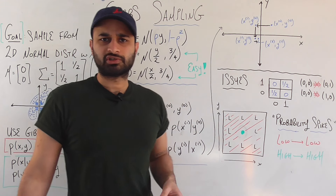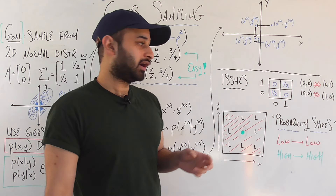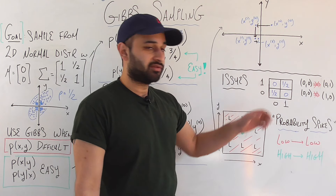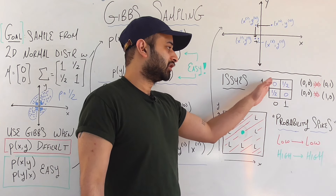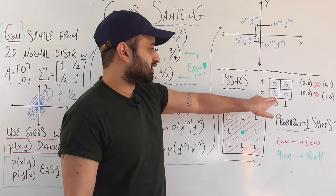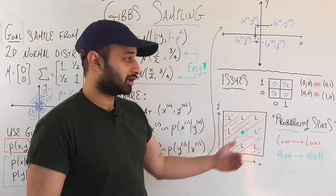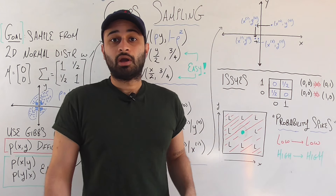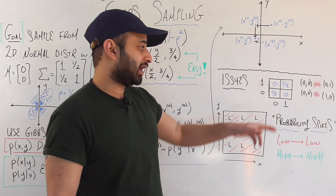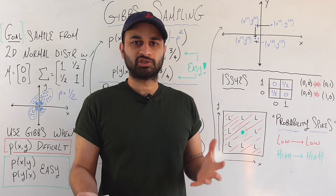There are some pitfalls where Gibbs sampling doesn't work as expected. The first is a contrived case where you have probability only at (0,0) and (1,1) — half probability each — and zero probability elsewhere. If you start at (0,0), you can only move in the x or y direction. Moving in the x direction leads to zero probability, so you stay. Moving in the y direction — same issue. You can never reach (1,1) in a single step, so Gibbs sampling gets stuck.